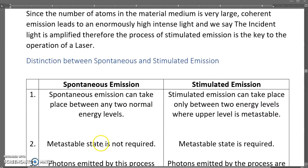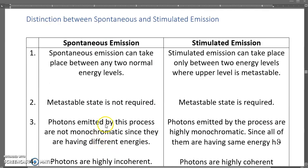Let us now see the distinguishing properties of spontaneous and stimulated emission. Spontaneous emission can take place between two normal energy levels, whereas stimulated emission can take place only between two energy levels where the upper level is metastable. The metastable state is not required in spontaneous emission, but it is required in stimulated emission.